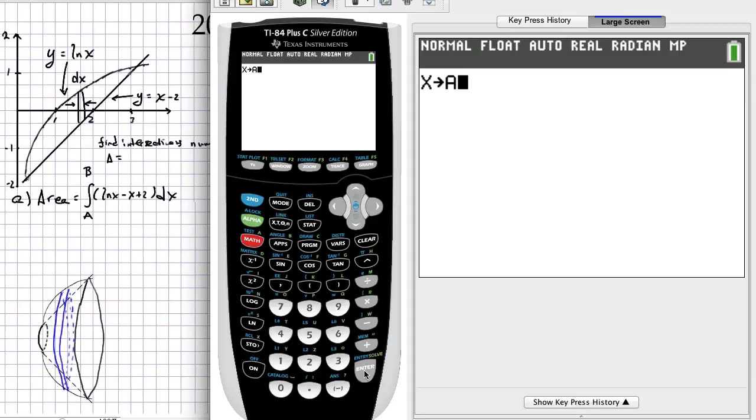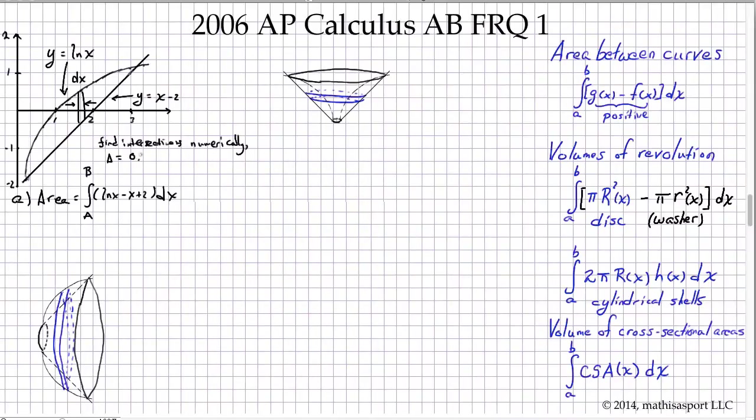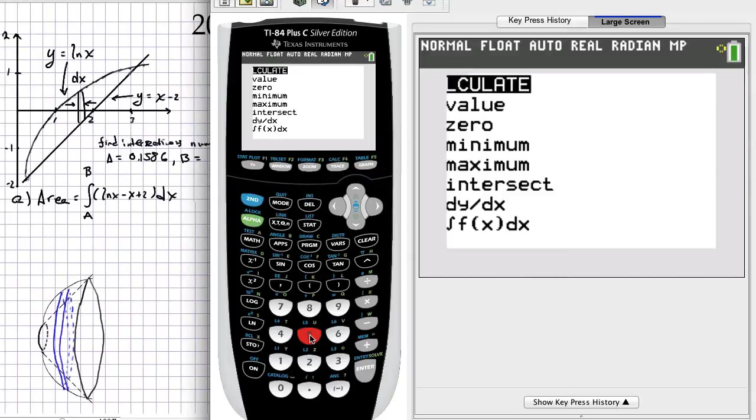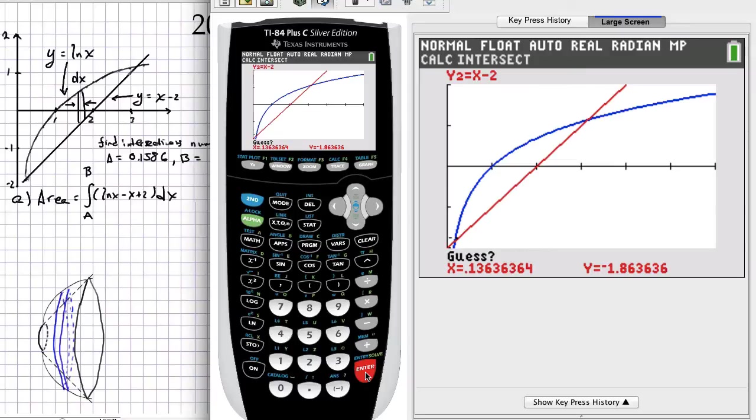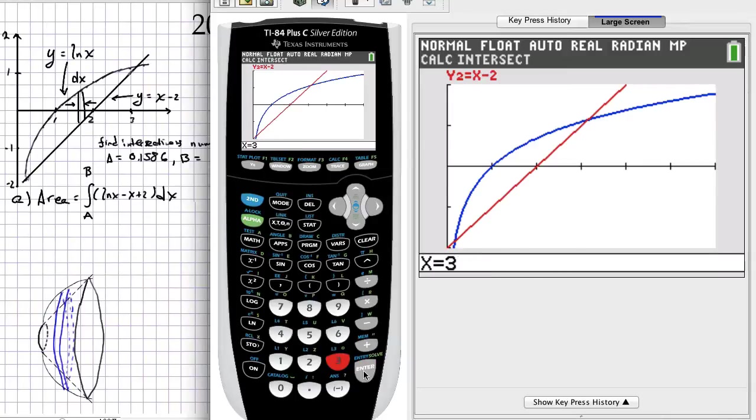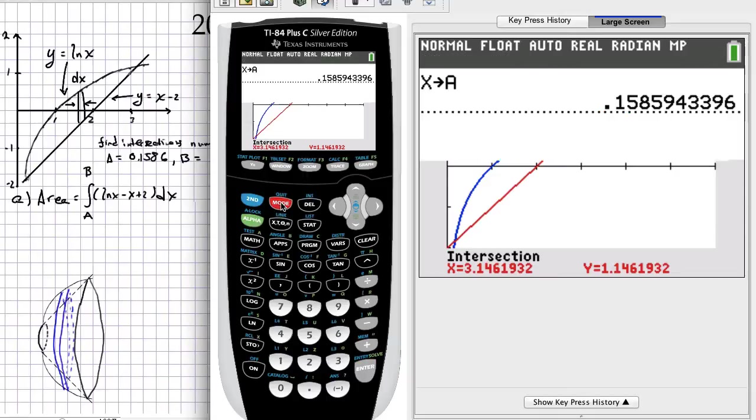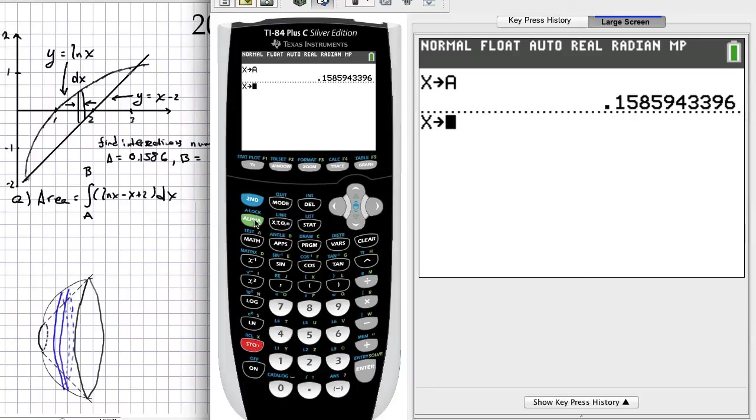Let's see what we get for b. We'll do the intersect again but indicate a different location as our initial guess. We'll go with 3 as our guess for X and we get 3.1462. Again, I'm going to store that in b so I don't have to re-look for that value.